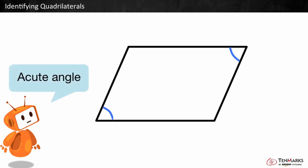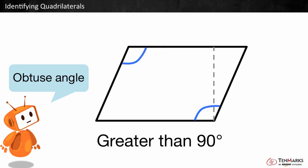An acute angle is an angle less than 90 degrees. An obtuse angle is greater than 90 degrees.